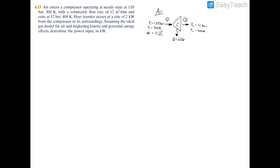Okay, so this is a fairly simple problem working with a compressor. It's going to take air in and release compressed air. We have the pressure, temperature, and volumetric flow rate at the inlet, and then the pressure and temperature at the exit. We're told that heat transfer occurs at a rate of 2 kilowatts from the compressor to the surrounding, and this air can behave as an ideal gas.